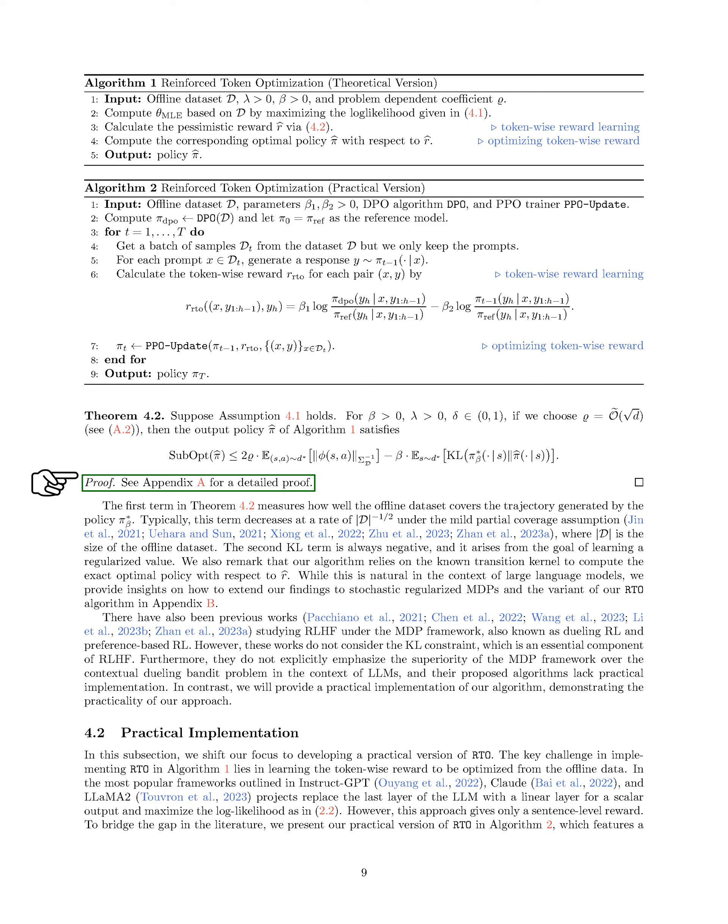In this section, we focus on creating a practical version of RTO. The main challenge is figuring out how to learn the token-wise reward from offline data. Many existing frameworks like InstructGPT, Claude, and LLaMA2 have tried replacing the last layer of the LLM with a linear layer to get a single output and then maximizing the log likelihood, but this method only gives a reward at the sentence level. To address this gap, we introduce our practical version of RTO, which includes a new way of calculating the token-wise reward. Our main idea is that for a trajectory τ = {S_h, A_h}_{h=1}^{H}, we can express the optimal policy as a function of Q*_β(s,a) and V*_β(s).